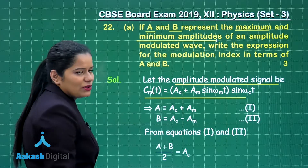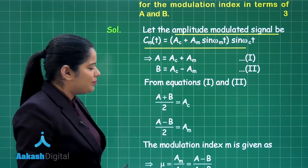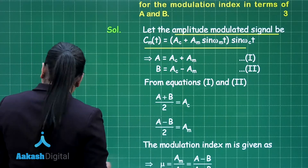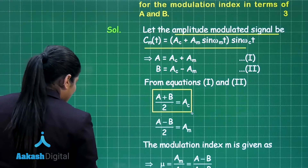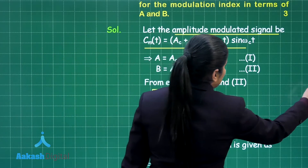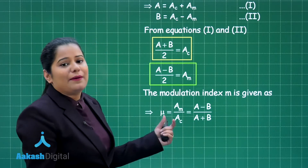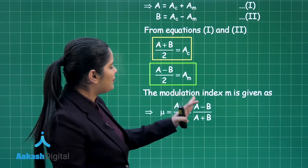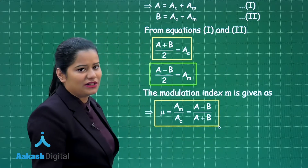Rearranging these two equations, you can calculate A_c and A_m in terms of A and B. A_c, the amplitude of the carrier wave, comes out to be (A + B)/2, and A_m, the amplitude of the modulating wave, comes out to be (A − B)/2. The modulation index is the ratio of the amplitude of the modulating wave to the amplitude of the carrier wave — that is A_m/A_c — which equals (A − B)/(A + B). This is the final result we need to derive.